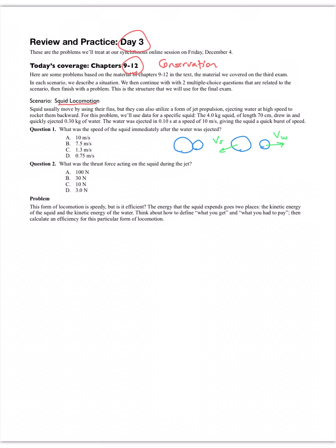The momentum of the squid plus the water is still zero because initially it was zero. After the ejection of the water, it's still zero. So the mass of the squid times the speed of the squid equals the mass of the water times the speed of the water — the momentum of the squid to the left equals the momentum of the water to the right. That's conservation of momentum. Plugging in numbers, the squid is recoiling at a speed of 0.75 meters per second.